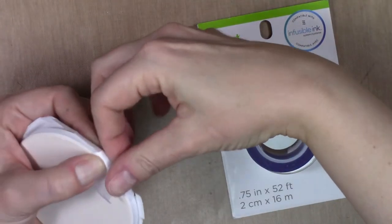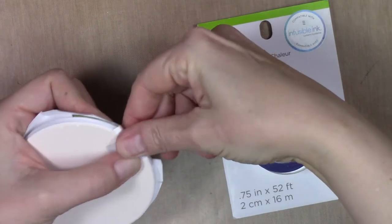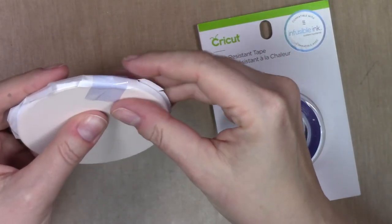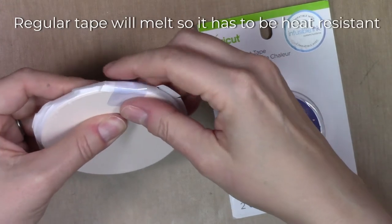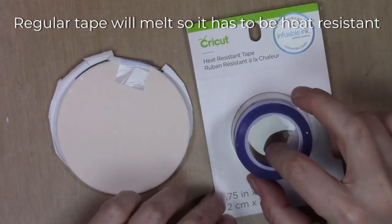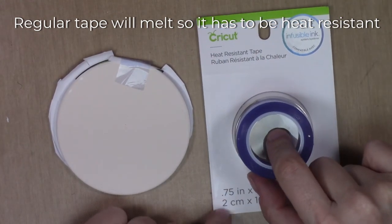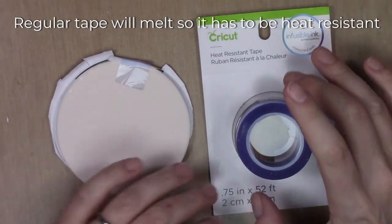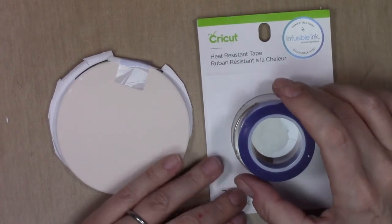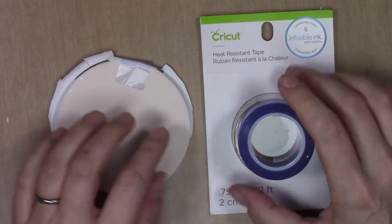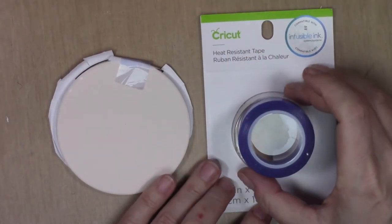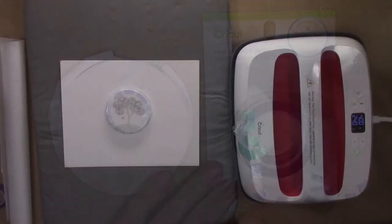I'm going to use this heat resistant tape to tape it in place. I would say that's pretty important. This is Cricut. We Are Memory Keepers has a brand, and then there's also other brands that are available on Amazon. So you don't have to get the Cricut one. This just came with my EasyPress when I purchased it. I'm going to tape around this to keep it in place, and then we will heat it up.